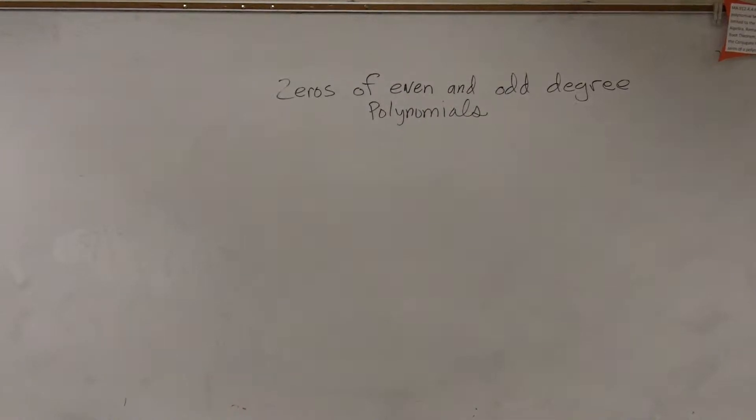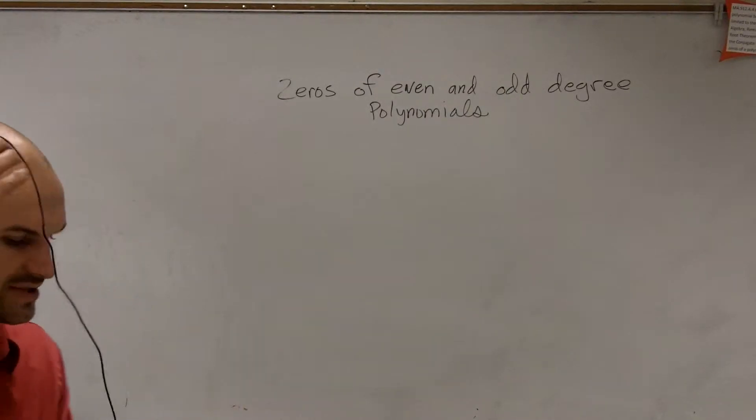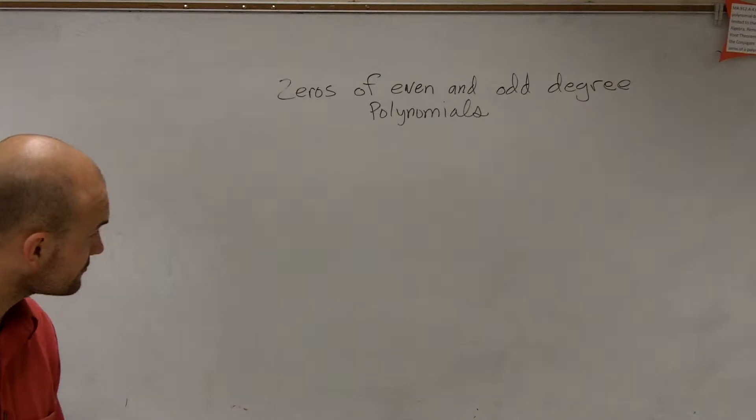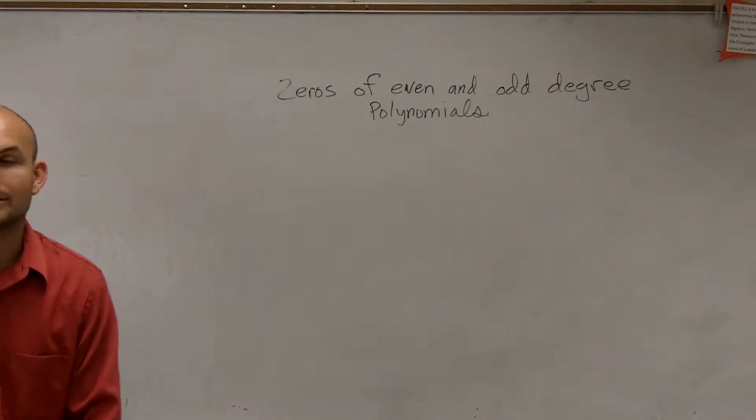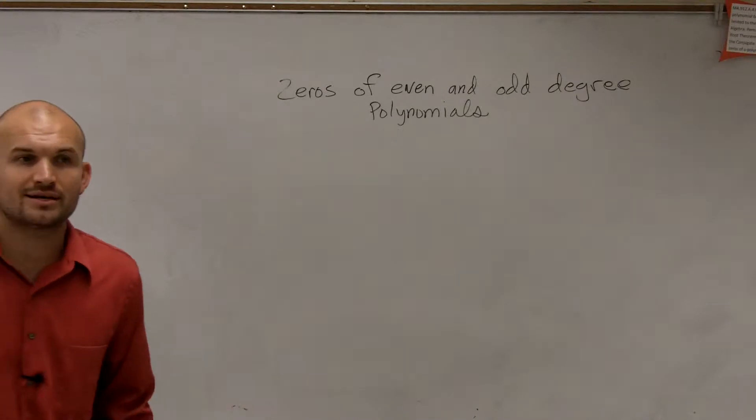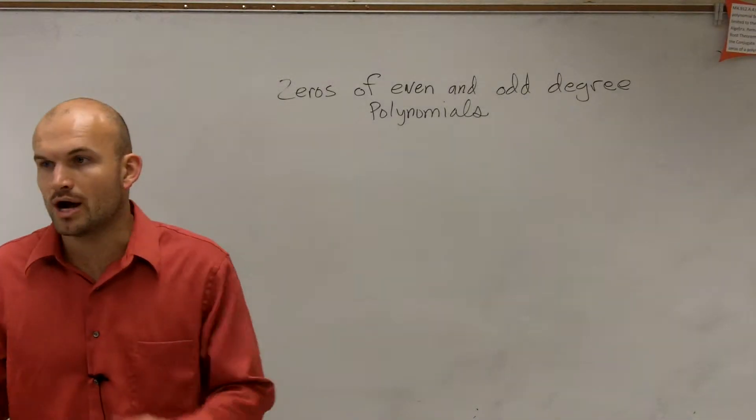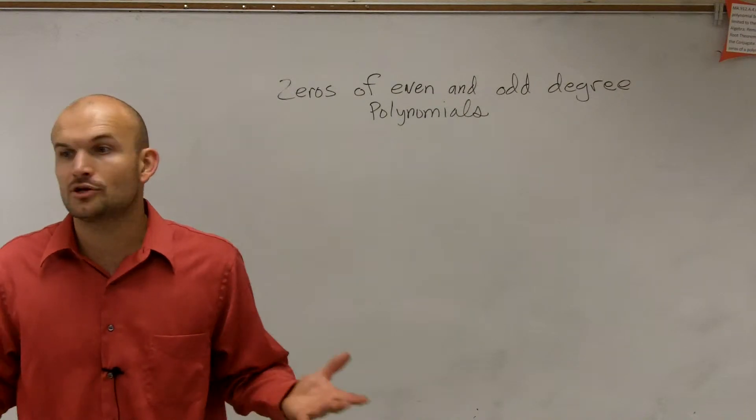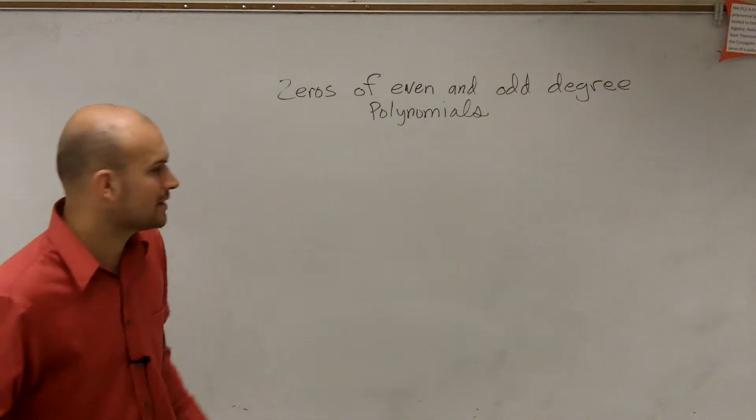OK, so what we're going to be looking at here is the zeros of even and odd degree polynomials. When looking at even and odd degree polynomials, we're just going to base this off our two parent graphs. That's really all I want to deal with, is looking at the parent graphs of a polynomial.